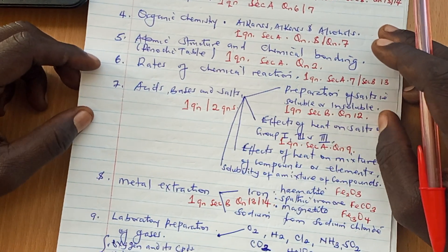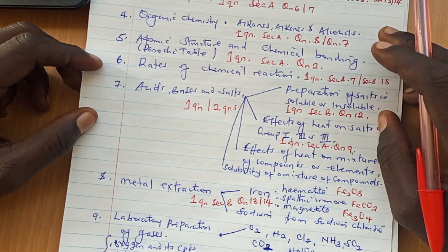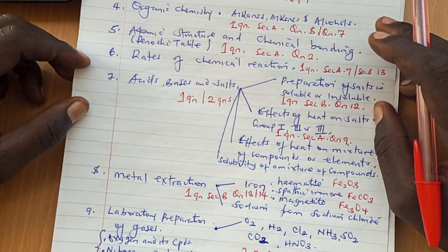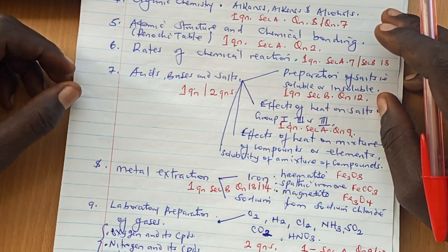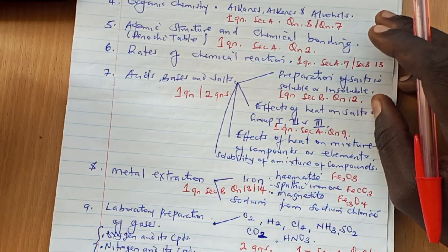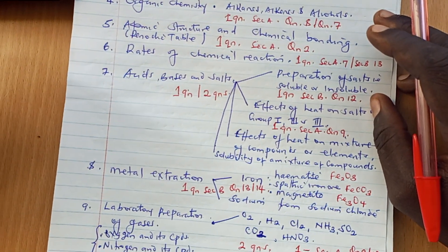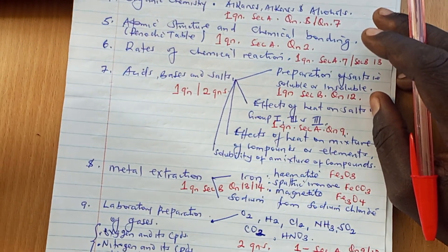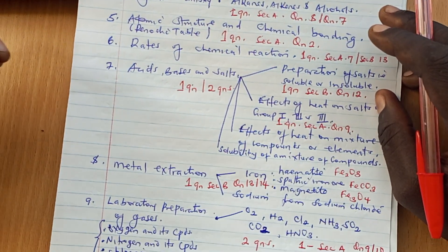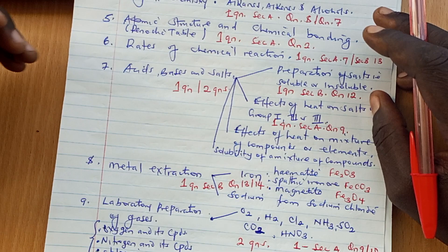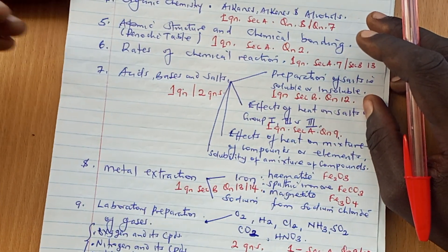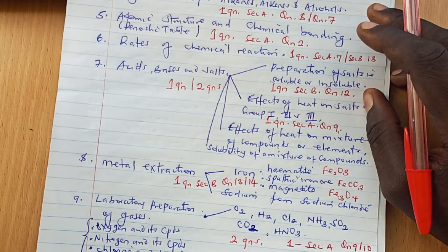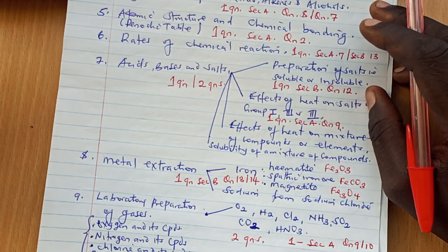The next topic is rates of chemical reaction. There is always one question in section A, and that is question number 7. Or if it is not brought in section A, it comes in section B as question number 13.